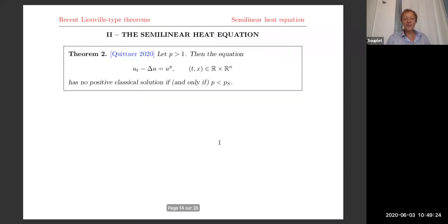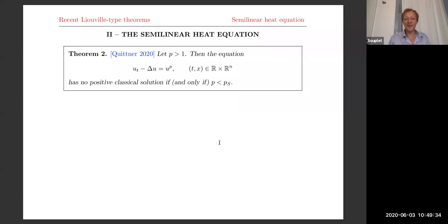Now I move to the second topic, which is closely related because it is the evolution version of the Lane-Emden equation — the semilinear heat equation. Let me immediately state the fantastic result by Pavel Quittner obtained a few months ago, which gives a kind of final point to more than 20 years of studies on this problem. In my opinion, it's a very fundamental result. He proved that for the superlinear heat equation, there is no positive classical solution globally defined in time and space — an entire solution — provided P is sub-Sobolev-critical.